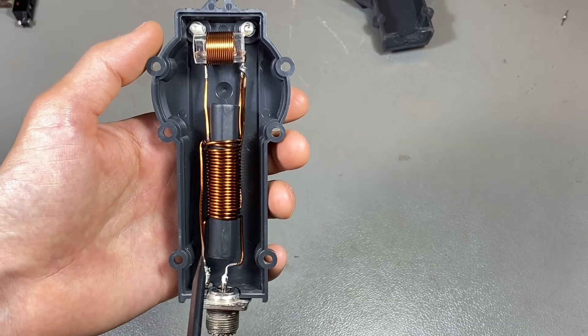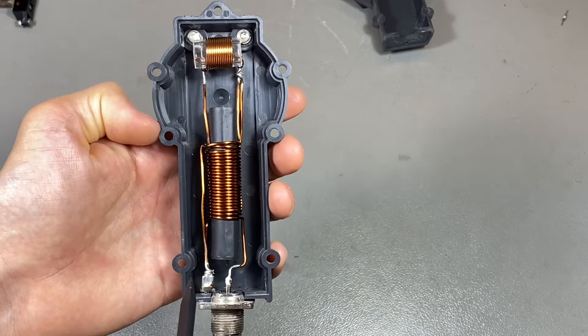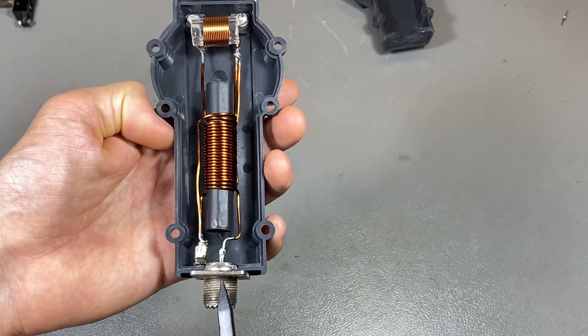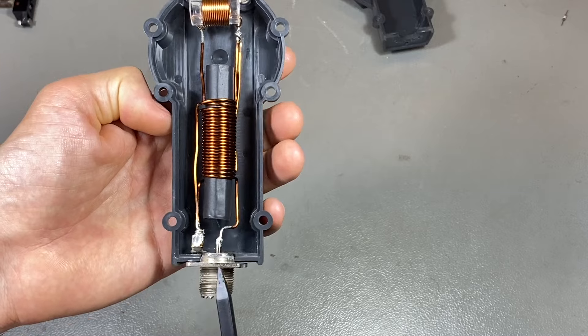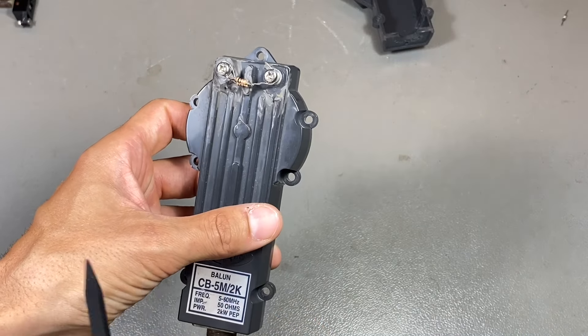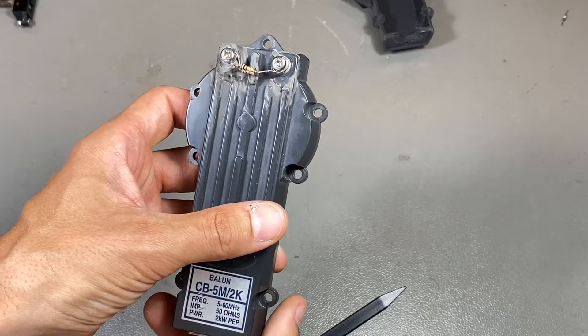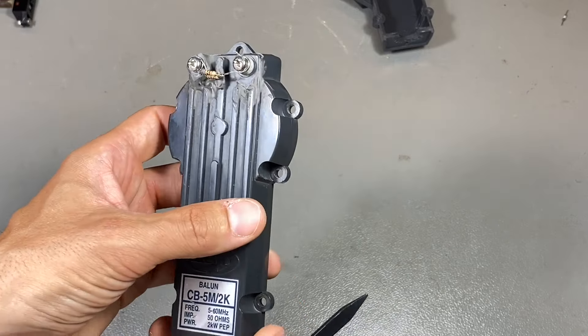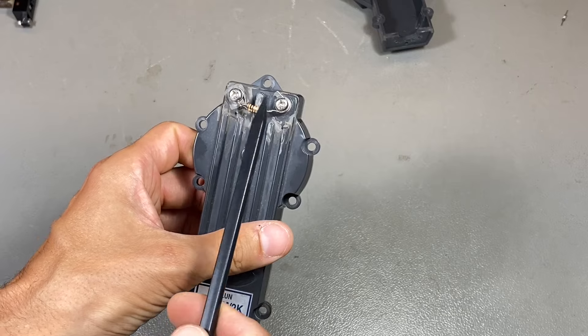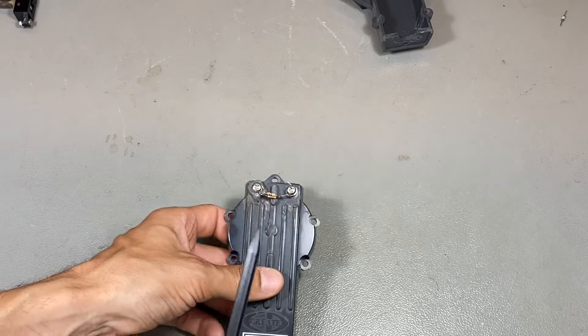But then when I tested the balun itself, I am testing with the nanoVNA from the S-port, the S11, and terminating this with 50 ohms. If we terminate with 50 ohms, and I remind you that the antenna that this balun should see is a V-dipole.